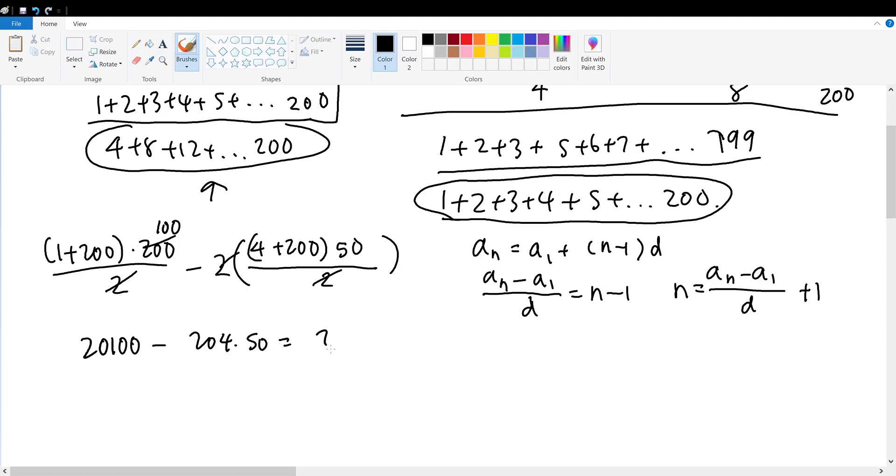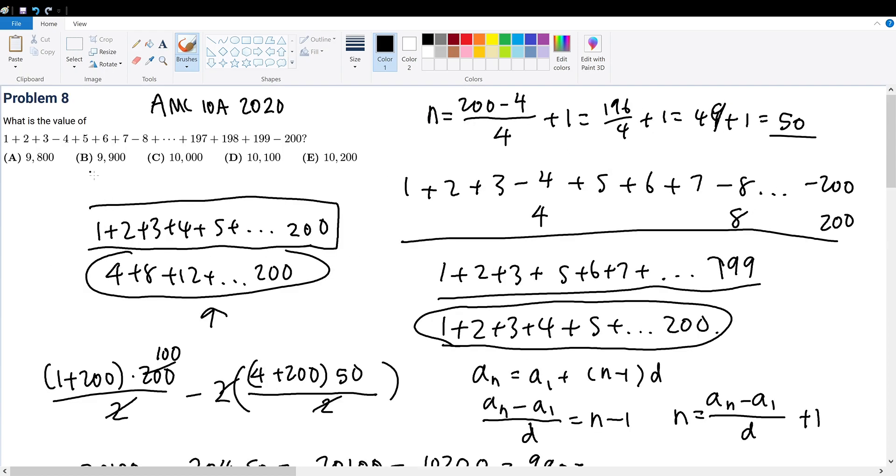Which is 20100 minus 10200, which is 9990. So the solution to this question will be answer choice B with 9990.